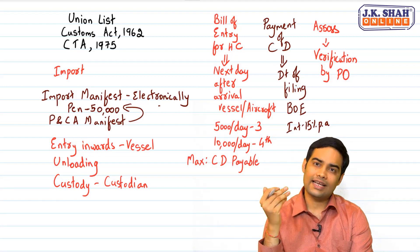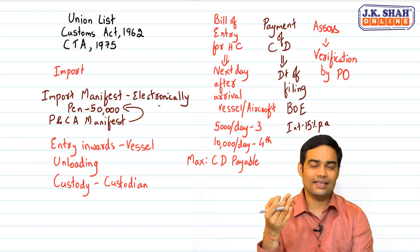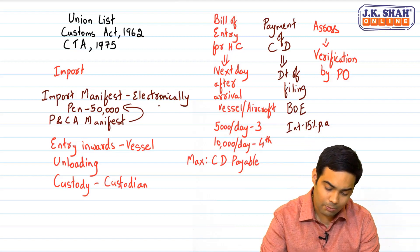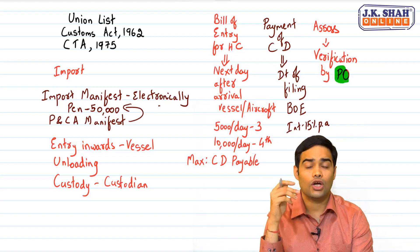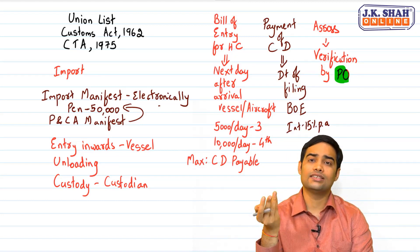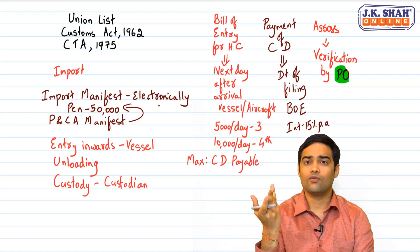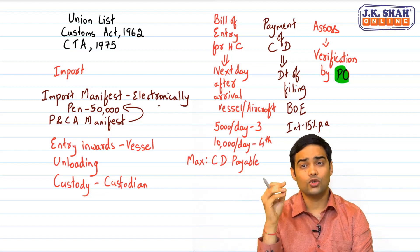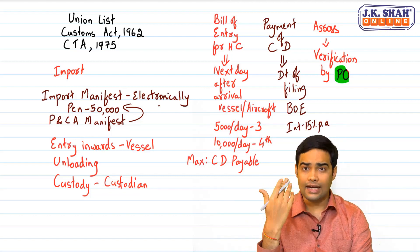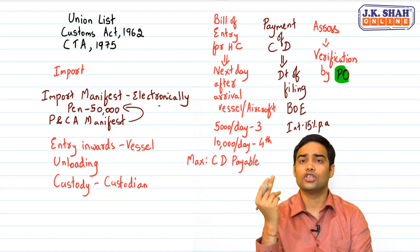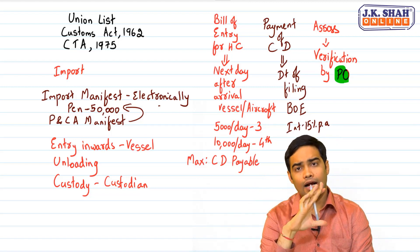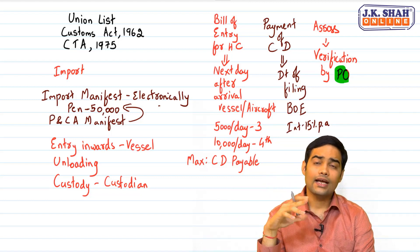If you are not satisfied with the proper officer's assessment, you can go for provisional assessment to get the goods released, or alternatively go to an appeal. If that is also taking time, you can transfer the goods to a warehouse by giving a bond.